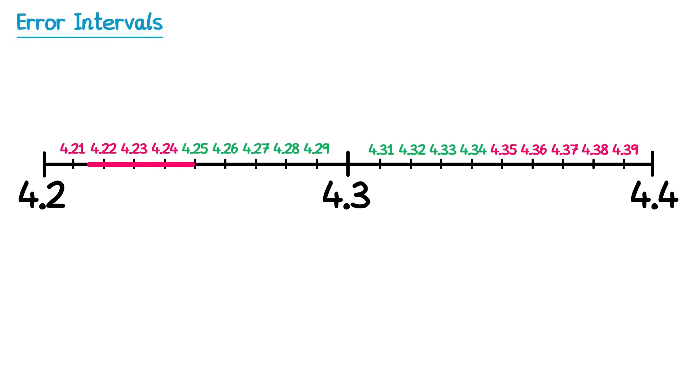So all of these numbers would round down to 4.2, all of these would round up to 4.4, but these would round up to 4.3, and these would round down to 4.3.